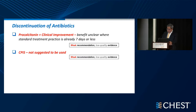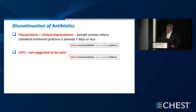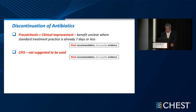We need to consider when to discontinue antibiotics once started. The guideline, though weak, recommended the use of procalcitonin with clinical improvement. However, this is less likely to be useful now that the standard practice of seven days of therapy is used in most hospitals. The use of CPIS is not suggested for discontinuation of antibiotics.